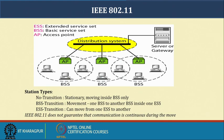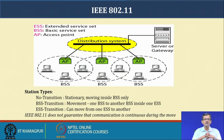Stations can move from one ESS to another. Typically, APs are connected on a backbone called the distribution system, which connects to a server or gateway providing different network-level services. This is the typical practical structure: different BSSes with their APs connected via the distribution system. However, 802.11 does not guarantee that communication is continuous during movement — the protocol does not guarantee faithful communication throughout overall movement.